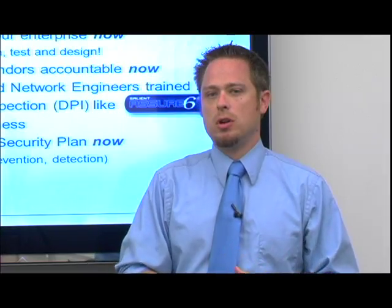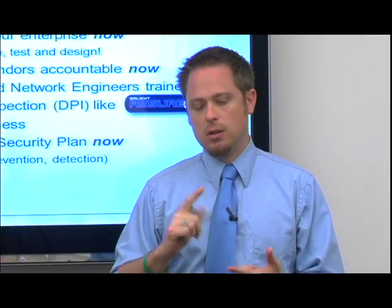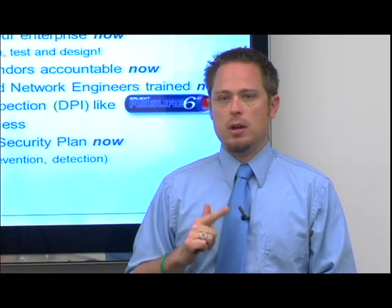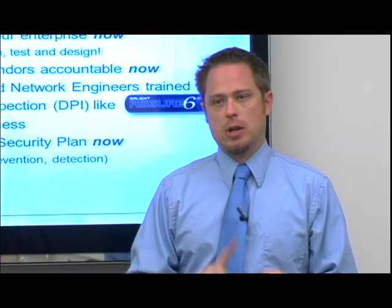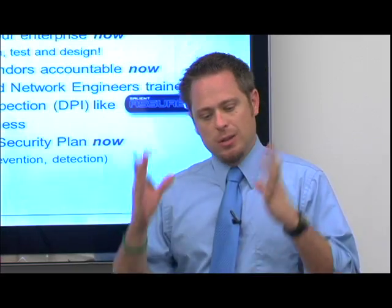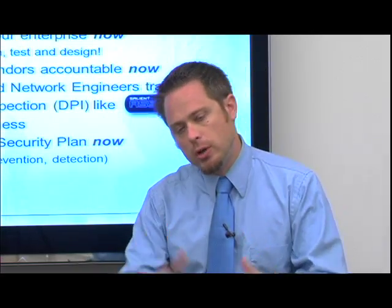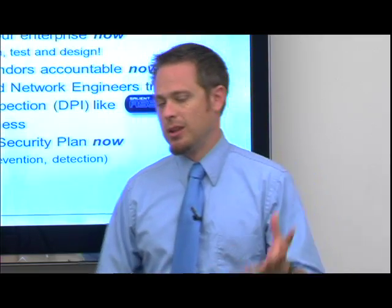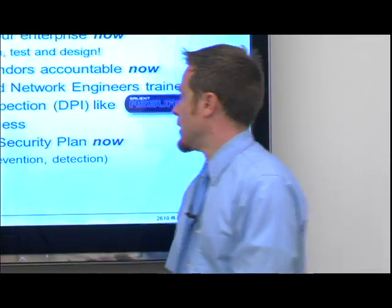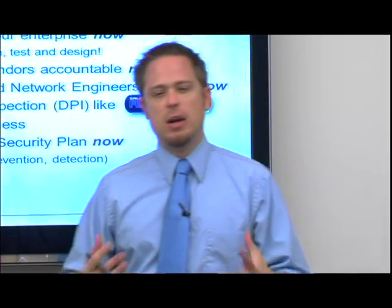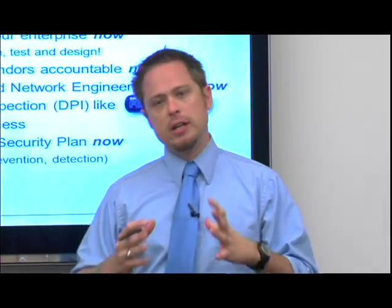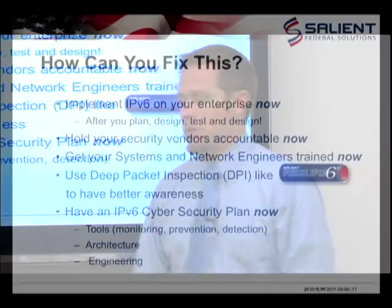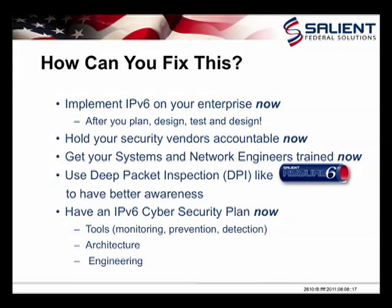Next, hold your security vendors accountable — your firewall vendors, IDS vendors, IPS vendors. Ask them: where are you with IPv6? Show me where you are with IPv6 security issues, specifically the four attack vectors we talked about. Also, get your systems engineers and network engineers to training classes and get them schooled up on IPv6 and IPv6 security. Use deep packet inspection — tools like Assure 6 can mitigate a lot of the issues we've talked about and more.